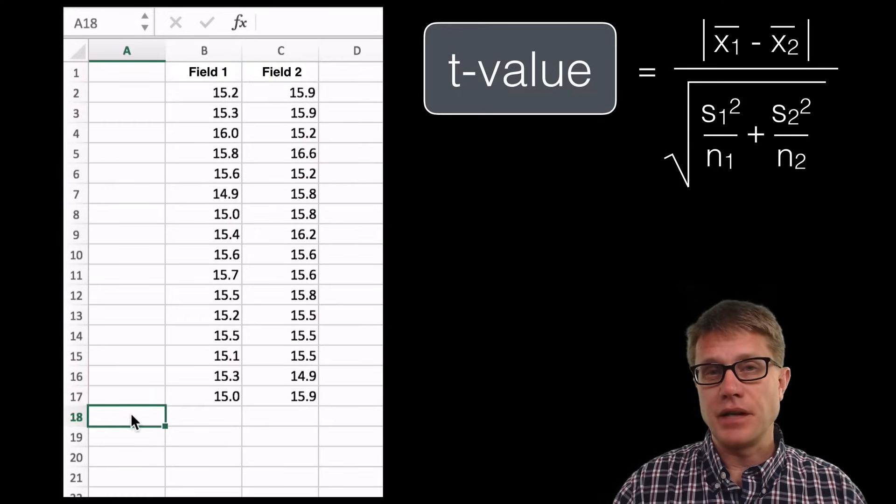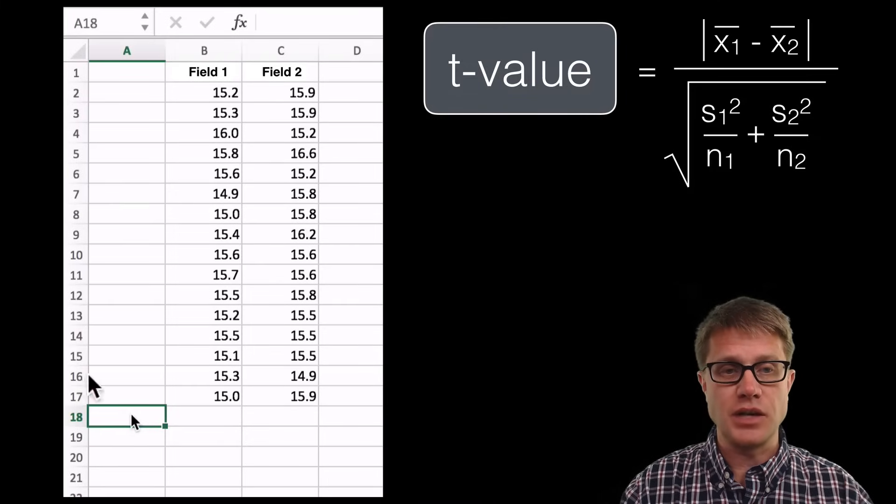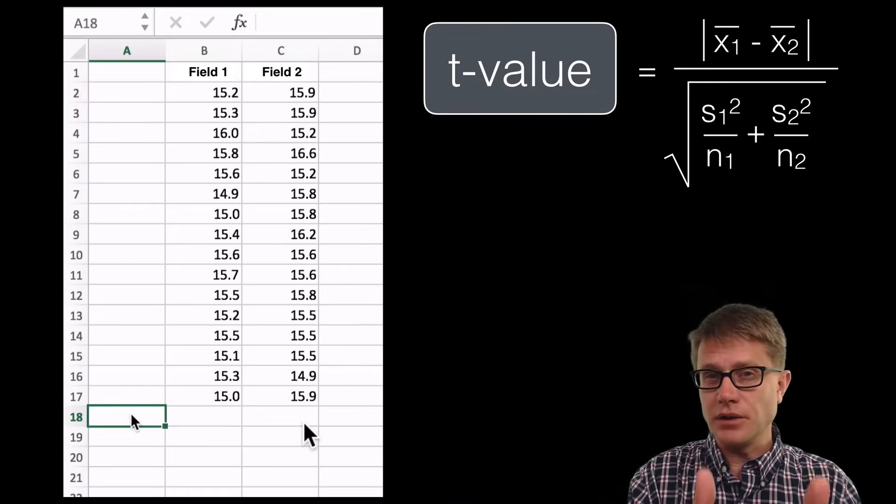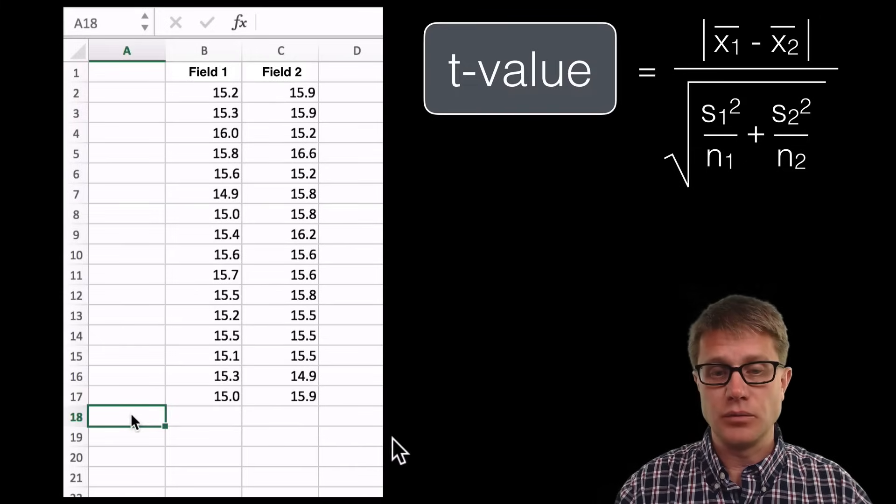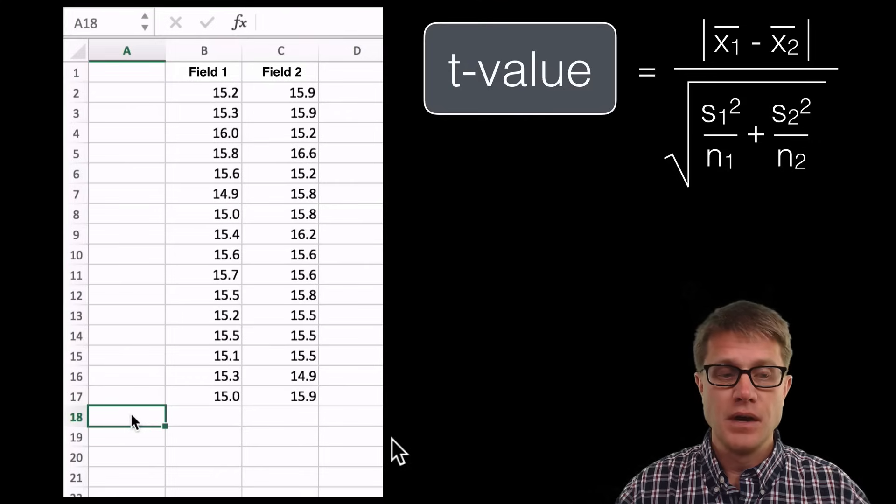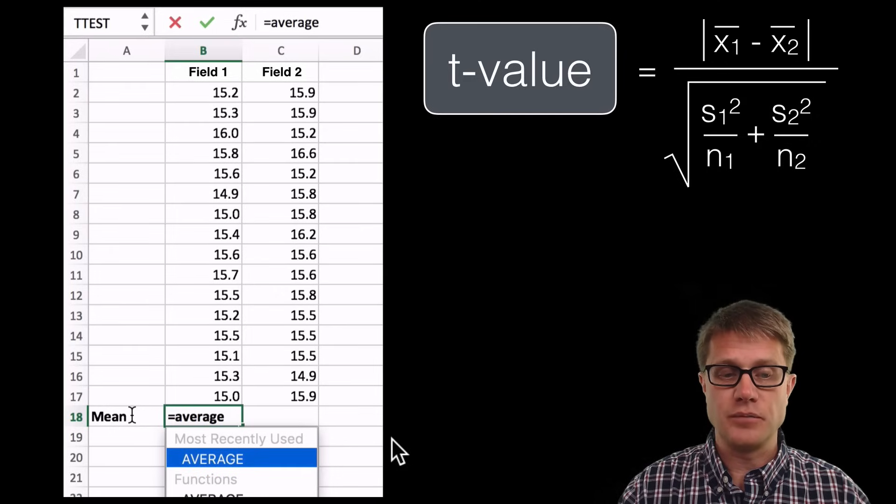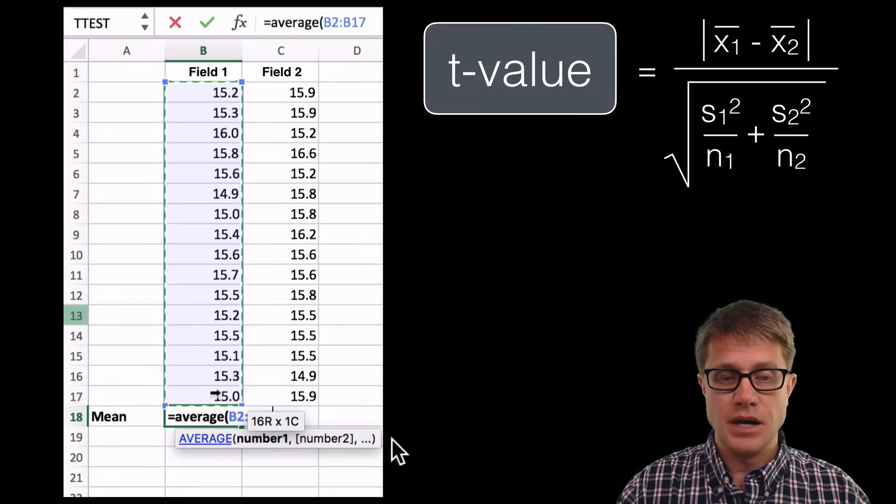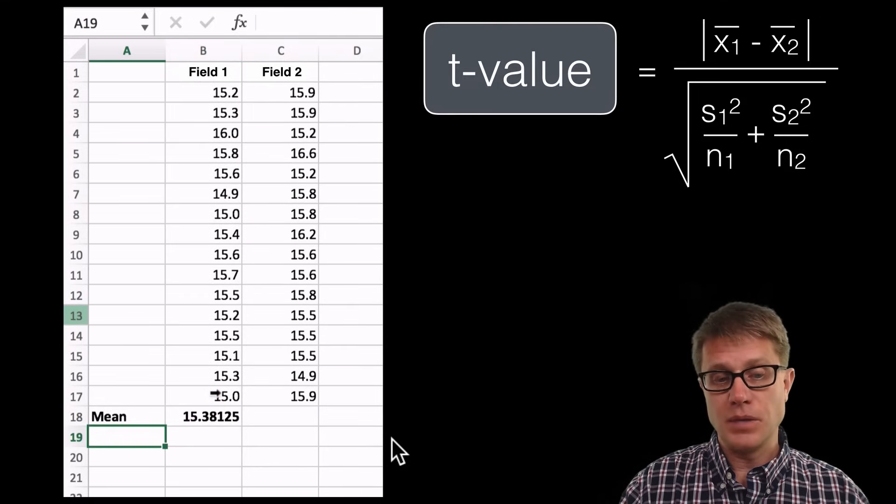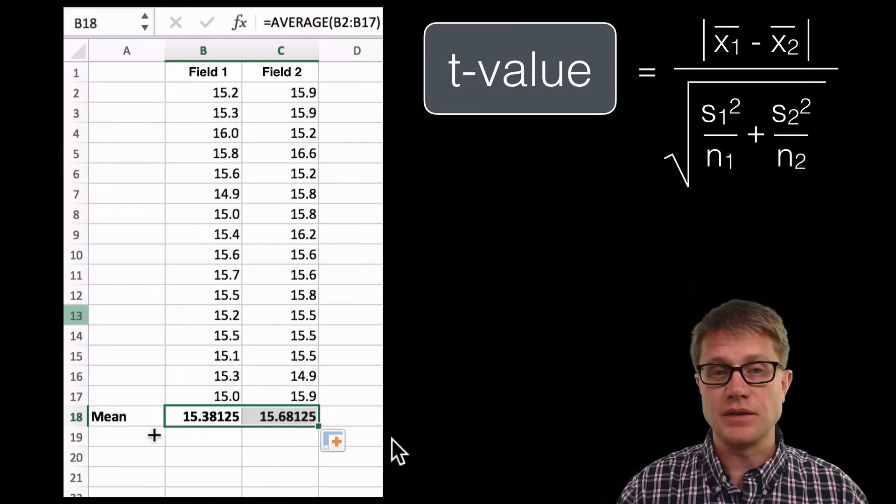Let me show you how to calculate that t-value. I'm using Excel, but you could use Google Sheets or even your TI calculator. If you look at these two samples from field one and field two, can you tell which one has a higher yield? It's really hard just looking at it. First thing we have to figure out is the mean. In a spreadsheet you hit equals average. I'm going to select that entire sample set from field one. I get a mean of 15.38. Now I can select that and drag over and get a mean of 15.68 in field two.